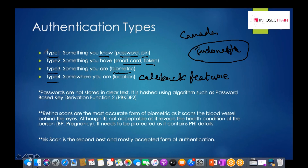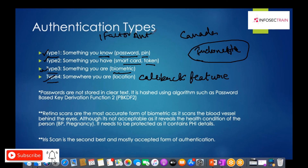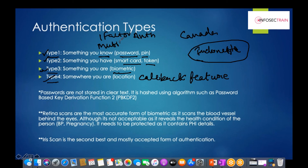If you are using just one of these factors — for example, only biometrics — it is called single-factor authentication. If you use a combination of two or more factors, it is called multi-factor authentication. Using two factors specifically is called two-factor authentication, and using three factors is three-factor authentication.